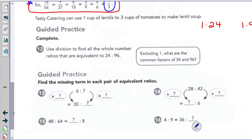I'm going to start number 12. I'm going to ask you, go ahead and do 13, 14, 15, and 16. See if you can find their greatest common factor. Use division to find all the whole number ratios that are equivalent to 24 to 96. Well, first, I've got to find their common factors. So the factors of 24, I do it in a two-column method.